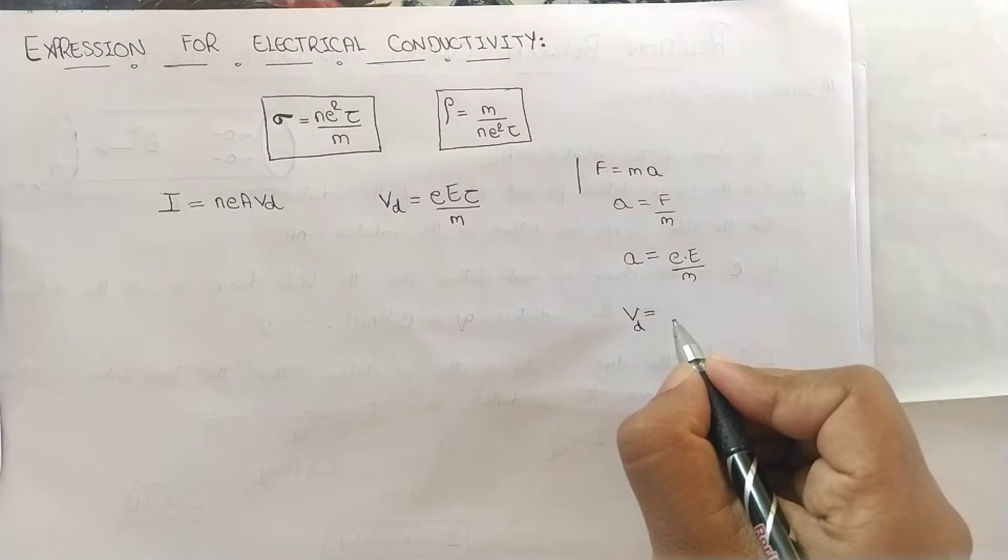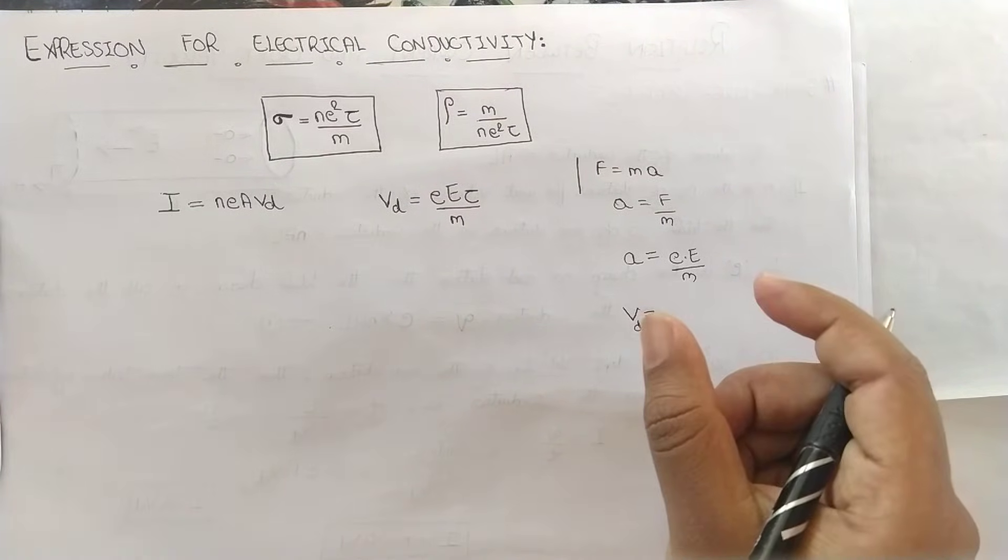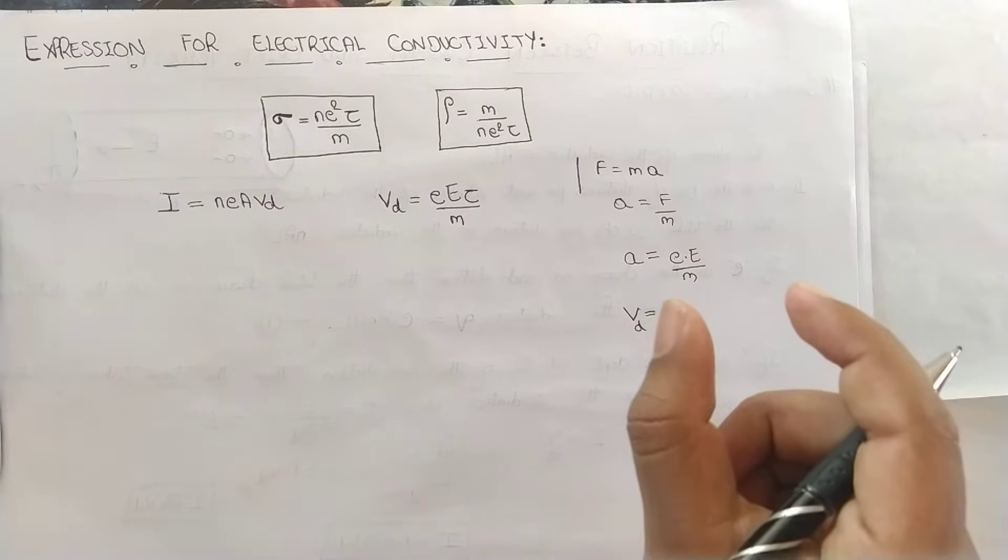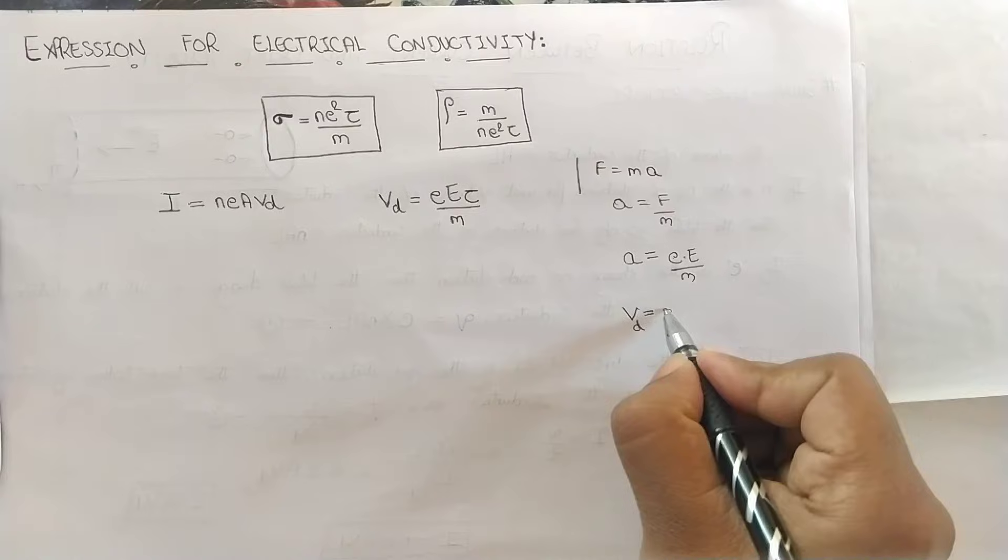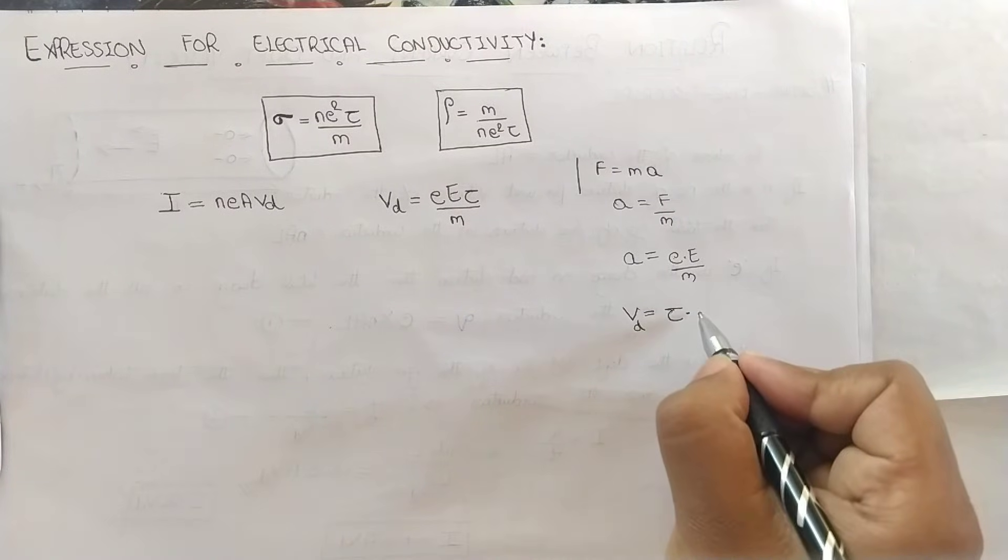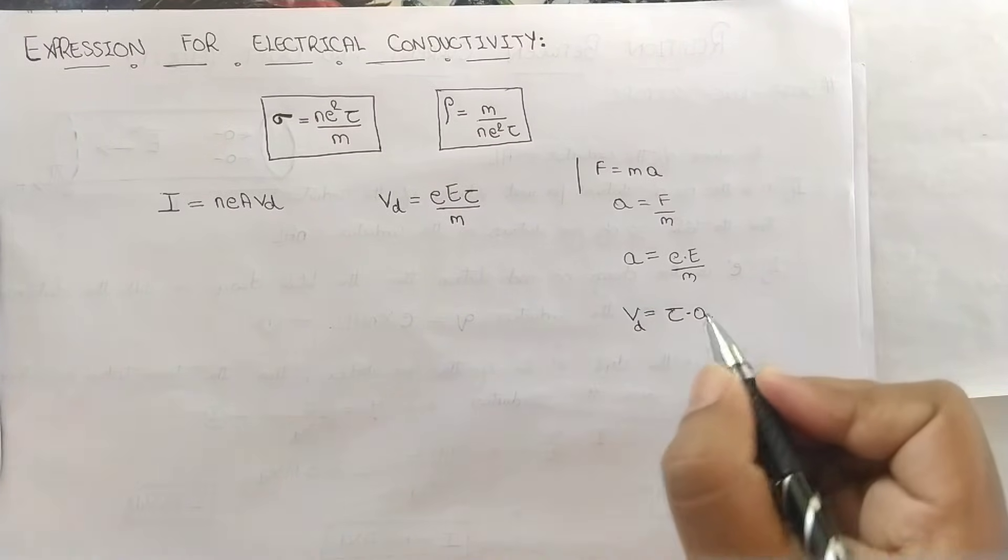What is time? The time is the average time between two successive collisions of the free electron we are considering. The average time is tau multiplied by the given acceleration.